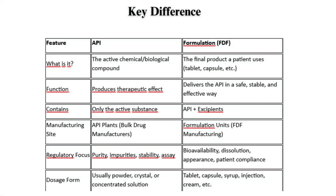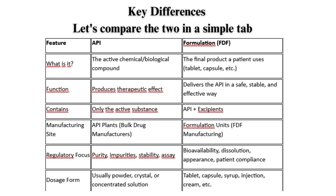Key differences — let's compare the two in a simple table. What is it? API is the active chemical or biological compound; formulation is the final product a patient uses, such as a tablet or capsule. API function: produces therapeutic effect. Formulation function: delivers the API in a safe, stable, and effective way. API contains only the active substance; formulation contains the API plus excipients.